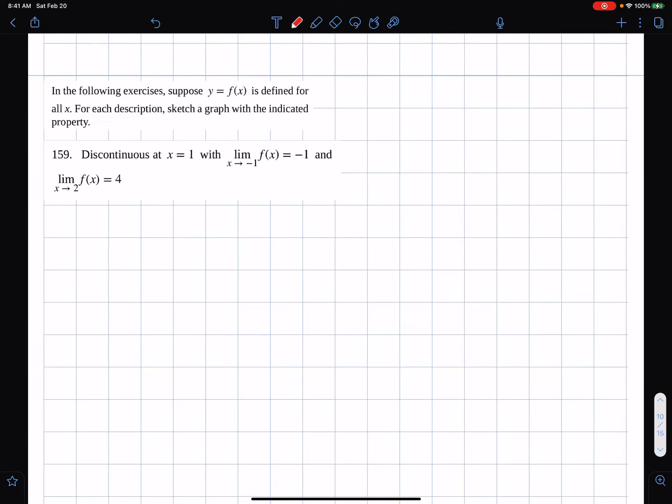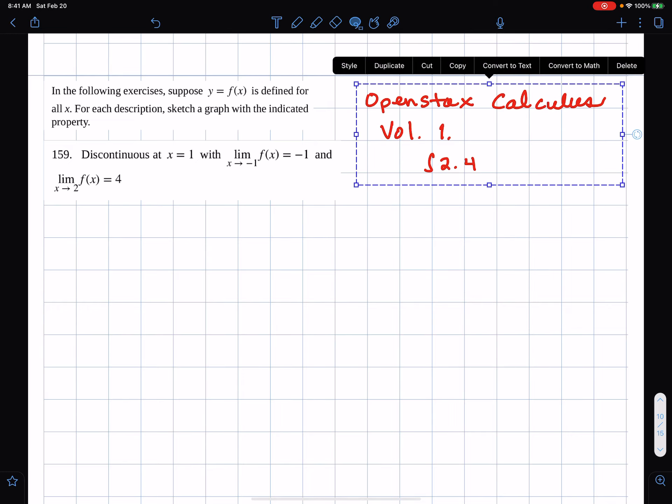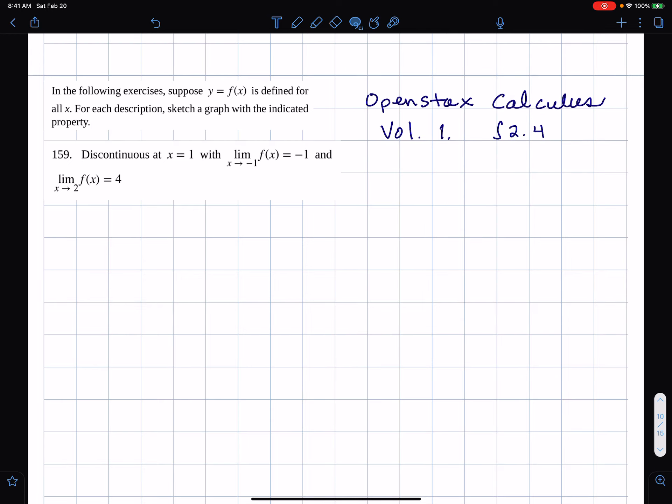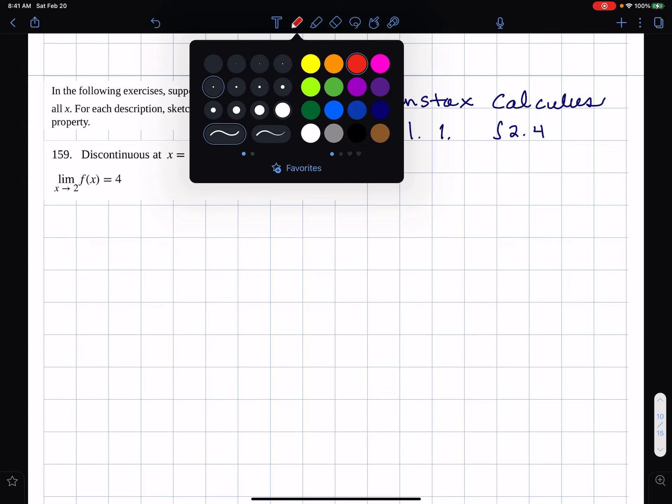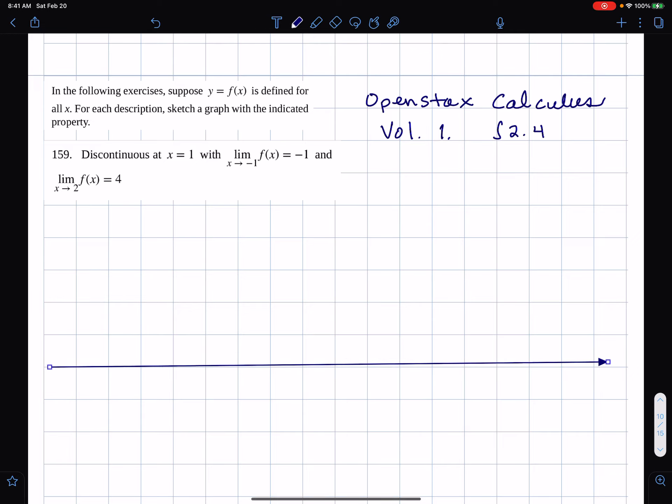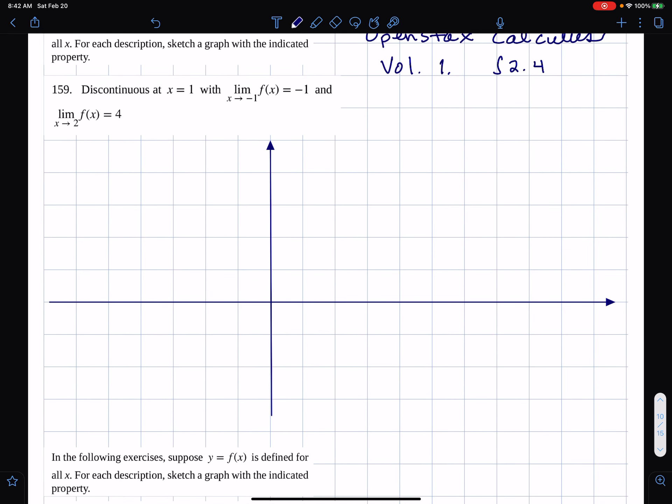All right, here we have this problem, which is from OpenStax's Calculus Volume 1. And we're looking at Section 2.4. So, what are we supposed to do? We're supposed to sketch the graph of a function that satisfies these criteria. Let me first just make an x, y plane here with the coordinate axes. Here's the x, y plane.